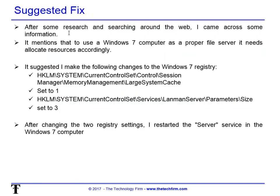I did some research and came across some helpful information. It mentions that if you want to use a Windows 7 computer as a proper file server, it needs to allocate resources accordingly. So you have to change two things in your registry, and then restart the server service. You could also reboot the computer, but I just restarted the service.